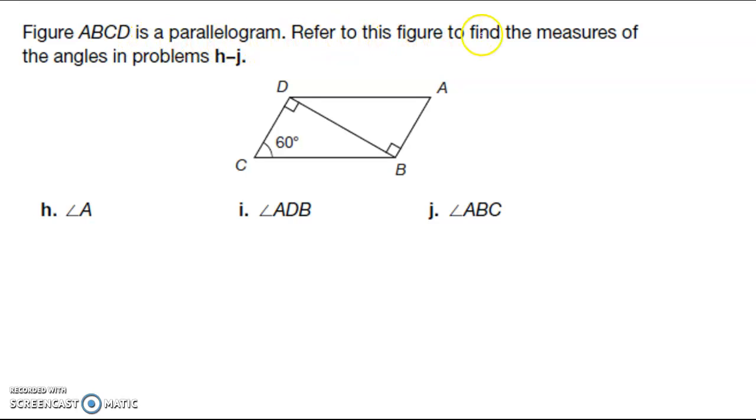Okay, more parallelogram magic. So figure ABCD is a parallelogram. Refer to this figure to find the measures of the angles in H through J. So if this is 60, I know this is 60. Okay, and then if I look at this triangle, this one—let me choose a different color—so we're just gonna look at this triangle right here.